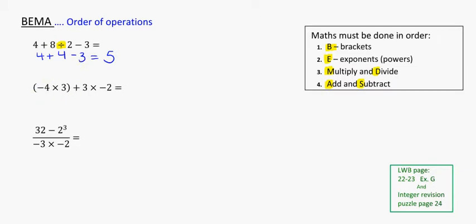Looking at the next example, scanning through again for things that are important to do. I'm noticing I've got brackets. So I realize that from BEMA, brackets is the very first thing I need to deal with. So I'm looking at how to solve what's inside this bracket first. And I see a negative 4 times a 3. Okay, don't freak out. It's a negative number. But remember, if the signs are opposite, we'll end up with a negative.